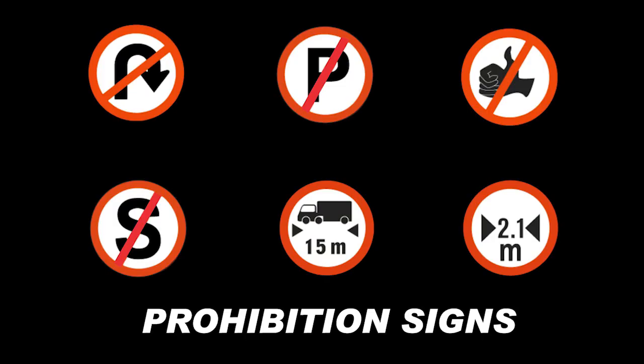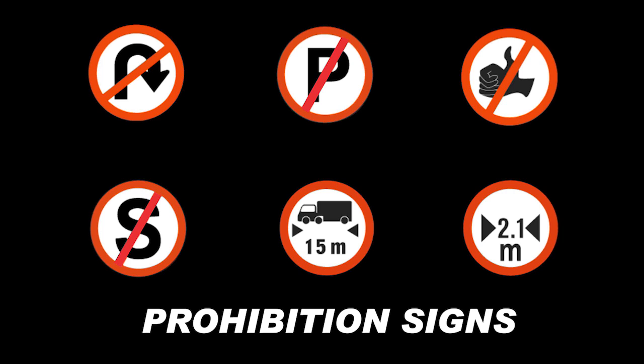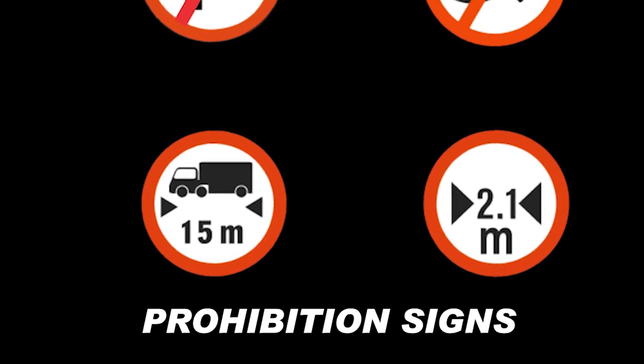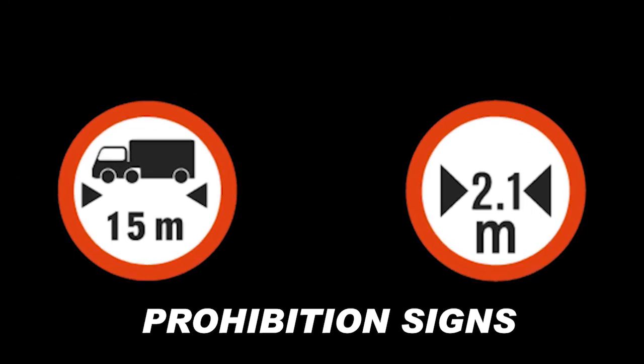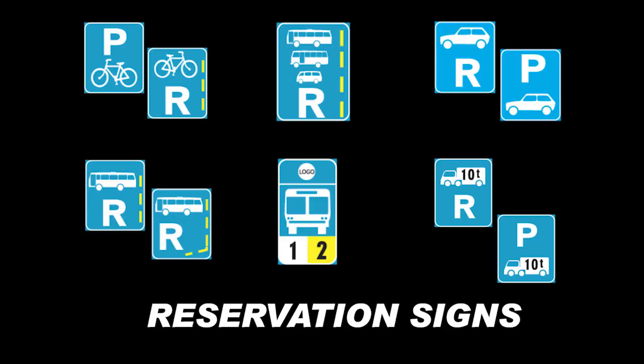Prohibition signs enforce maximum restrictions and tell you what you may not do. They are round in shape with a white background, a red border, and black text. Most prohibition signs are identified by a red line through them to indicate a restriction, though this is not the case for all prohibition signs.